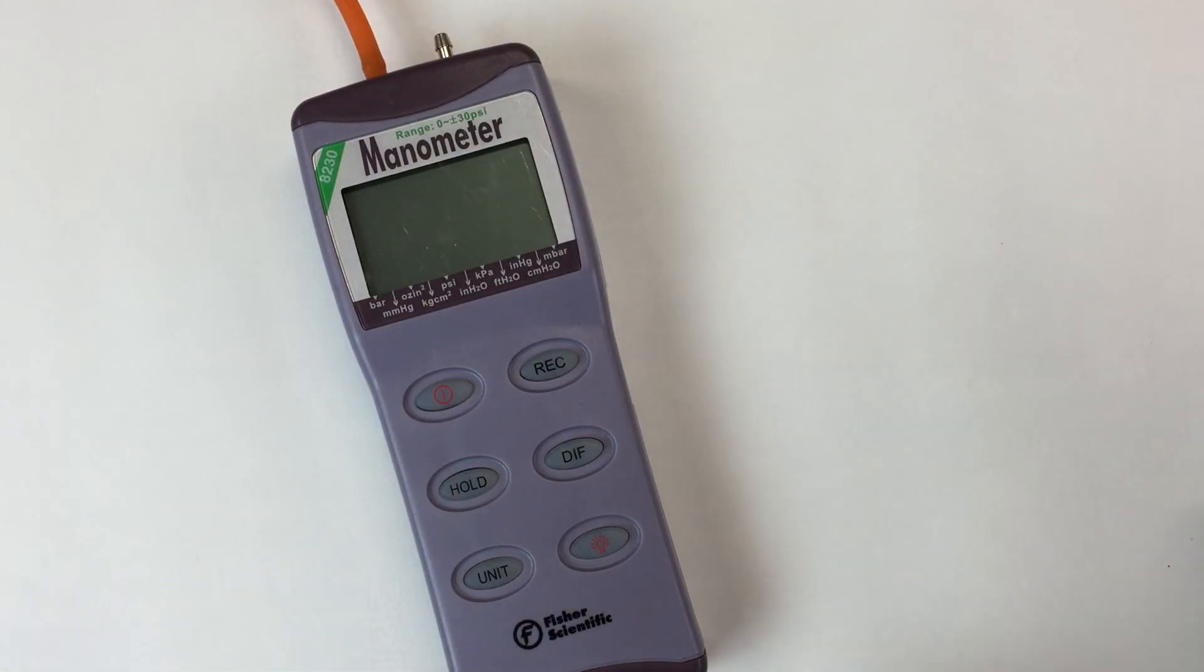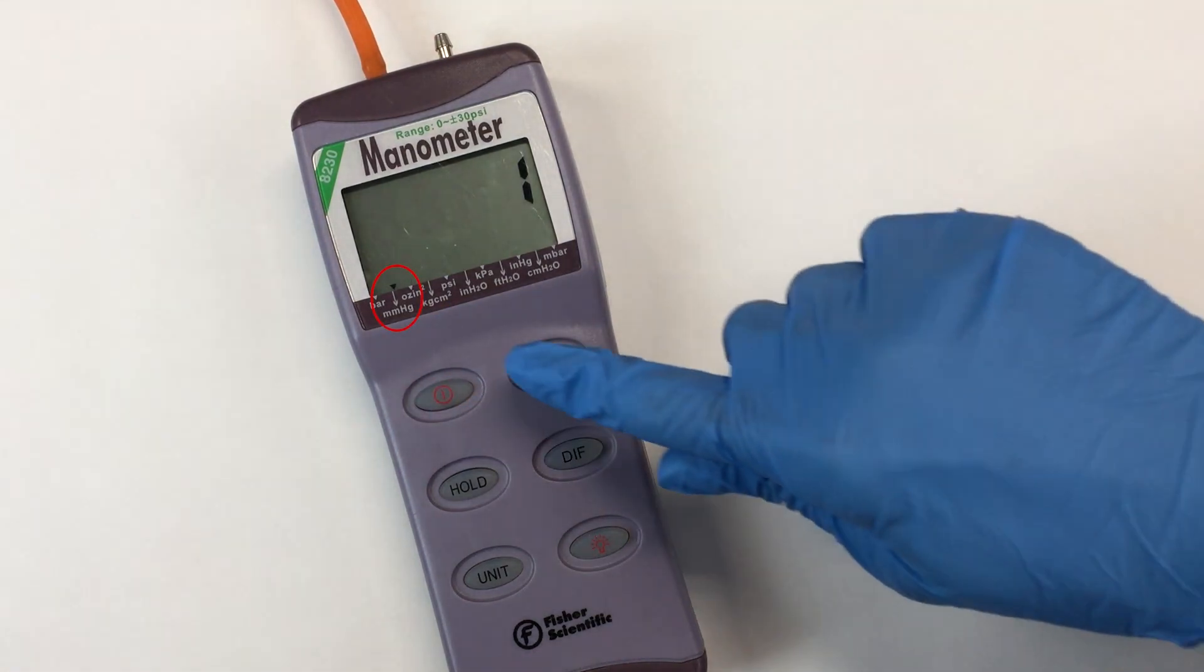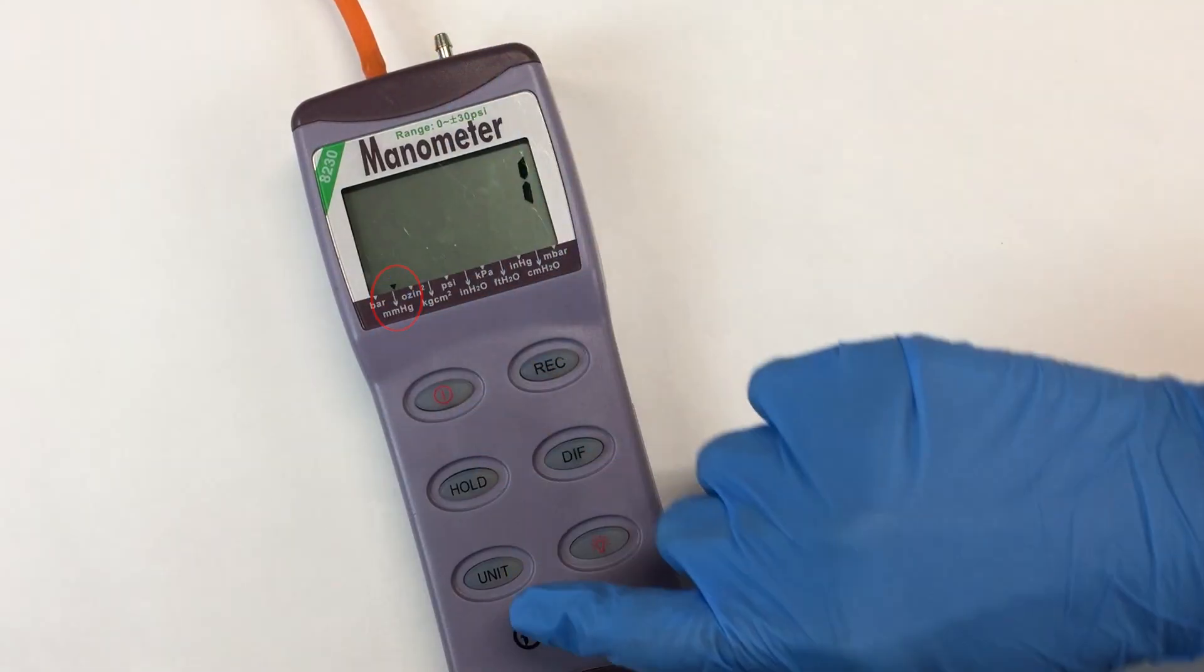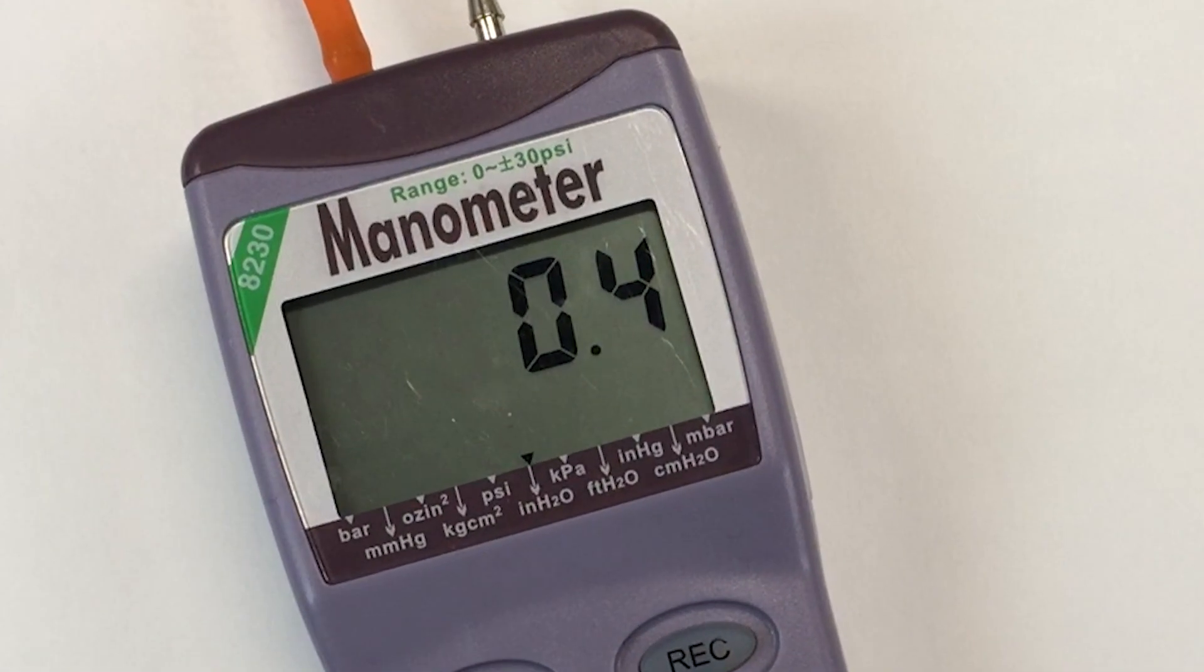Turn on the manometer using the power button. It should be set to millimeters of mercury. If it is not, you can use the unit button to cycle through the various units available until millimeters of mercury is indicated.